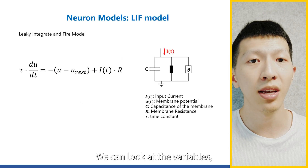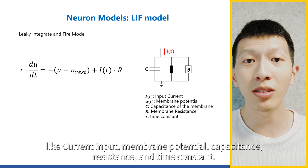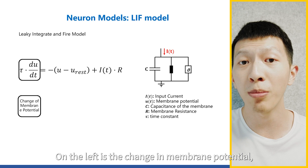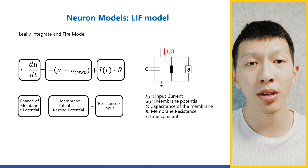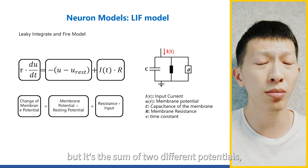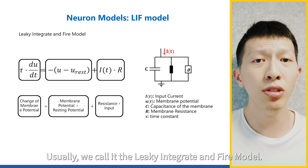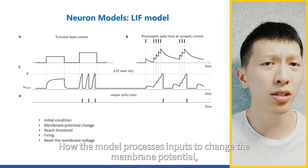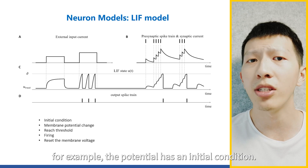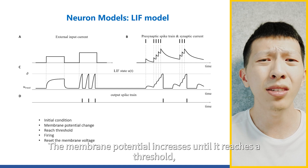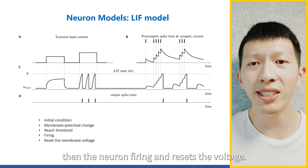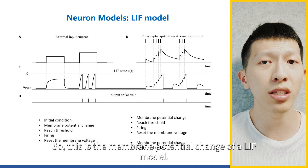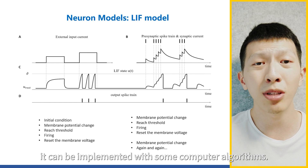We can look at the variables: current input, membrane potential, capacitance, resistance, and time constants. The change in membrane potential is related to these variables. The cell membrane of neurons can be simulated using physical models such as a resistor-capacitor circuit, and we can use biophysical models with specific differential equations to simulate the variation of the membrane potential. This is the basics of simulated neurons — usually called the Leaky Integrate-and-Fire (LIF) model. The membrane potential increases until it reaches a threshold, then the neuron fires and resets the voltage. This cycle repeats again and again, and can be implemented with computer algorithms.